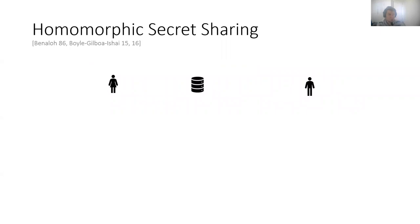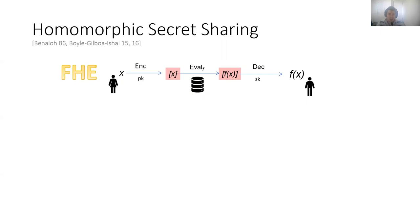Consider the following application of fully homomorphic encryption. Suppose that Alice has some secret input X, and she wants to delegate the computation of some function F on her input to a server, such that Bob will be able to learn the value of F of X. She can just encrypt her secret using fully homomorphic encryption and have the server perform the computation on the ciphertext, and then send it to Bob.